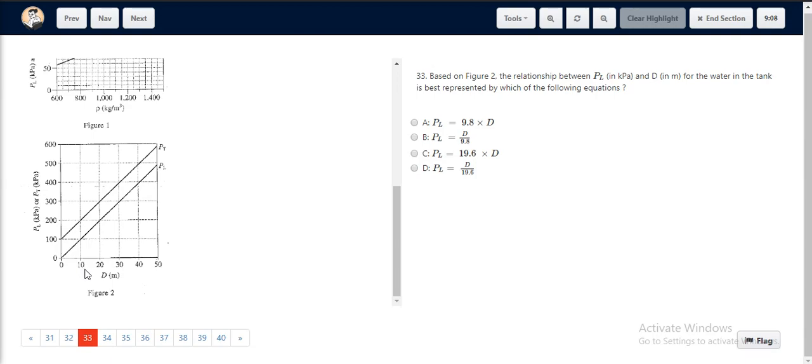For every value of D, the corresponding PL value is approximately 10 times greater. If we have 10 out here, the PL value is somewhere very close to 100. For 20 out here, again the same thing.